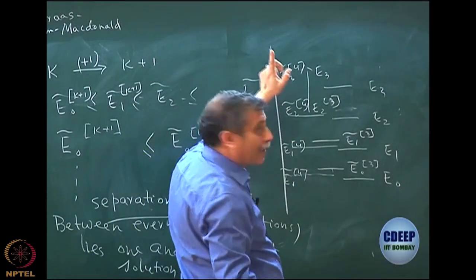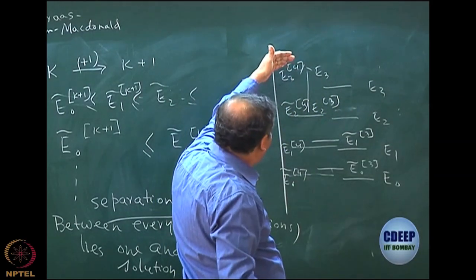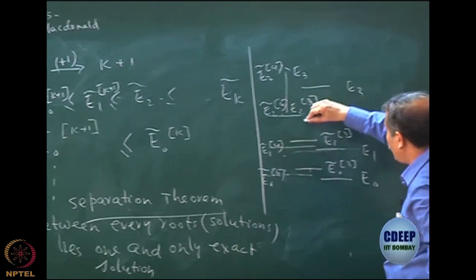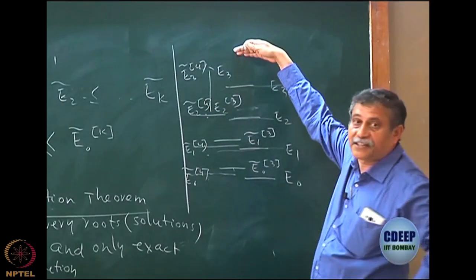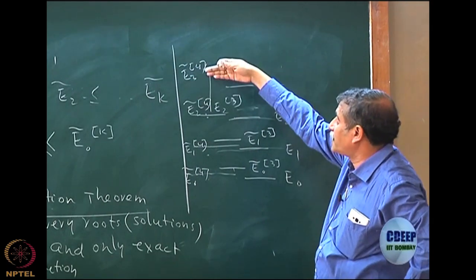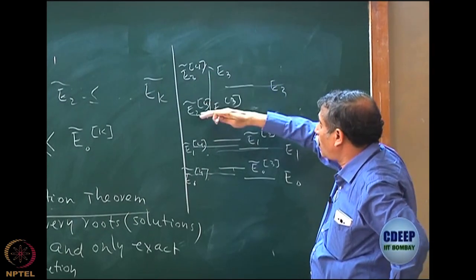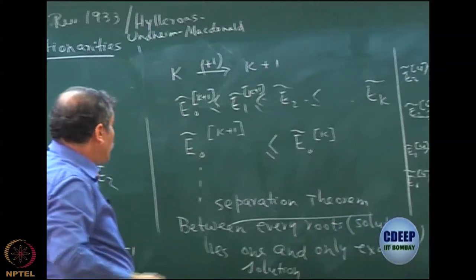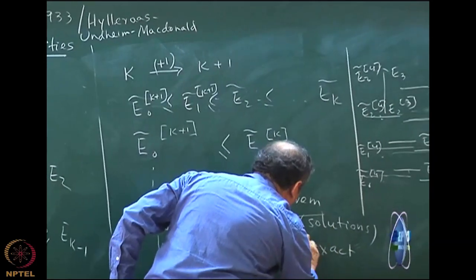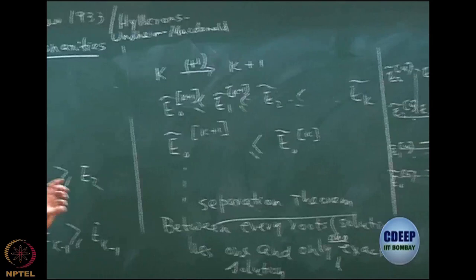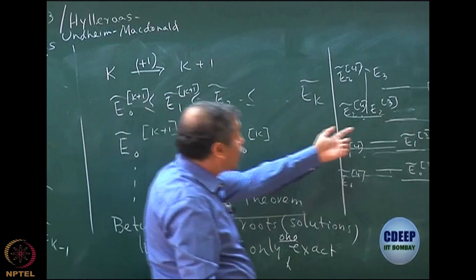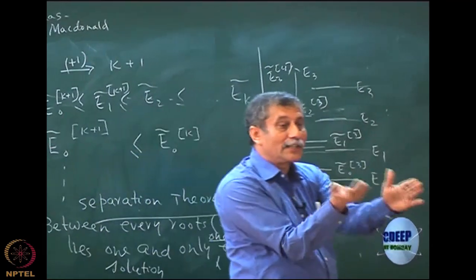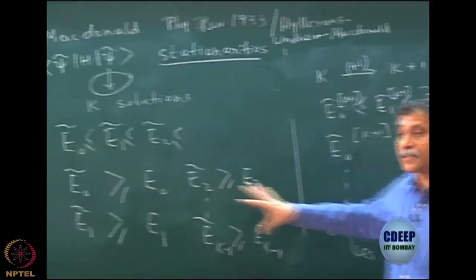Once I do that, the last one can be anywhere, but the moment I add another solution, that one will come down. Between E_0 tilde and E_1 tilde there is one exact solution, between the next pair there is one exact solution, and so on. So this solution must not cross E_3 exactly. This is the content of the theorem, which essentially says nothing can cross its own root because if it crosses, the theorem would be violated — between the two roots there would be no exact solution. So essentially, the upper bound property of the variation method is a consequence of the separation theorem.